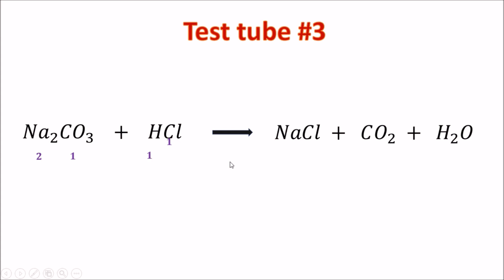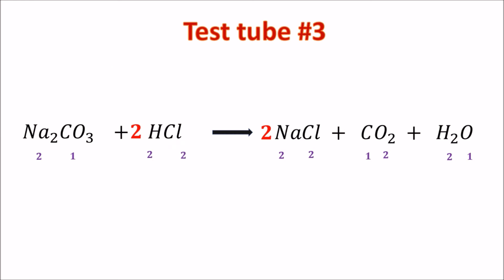Let's check if the equation is balanced. We see that Na is 2 on the product side, so they are not balanced. We put coefficient 2 in front of sodium carbonate — it becomes 2. The Cl on the left is only 1, so we put coefficient 2 in front of HCl, making Cl balanced at 2. The hydrogen is now 2 on each side and the equation is balanced.